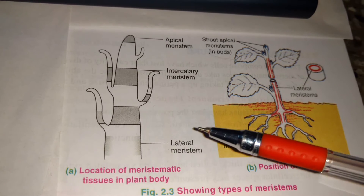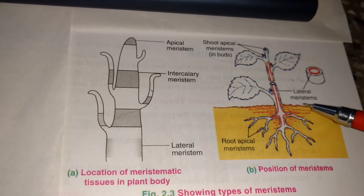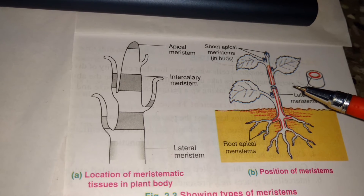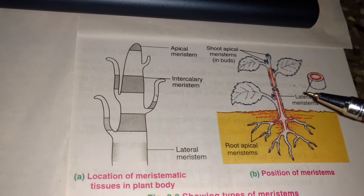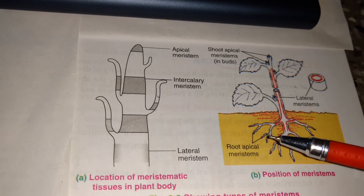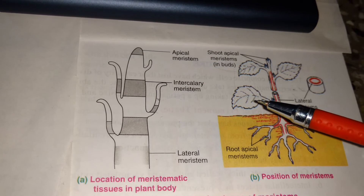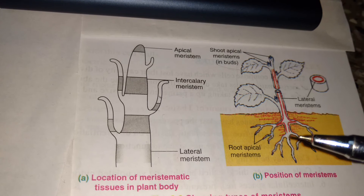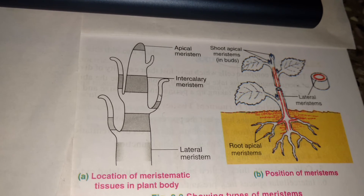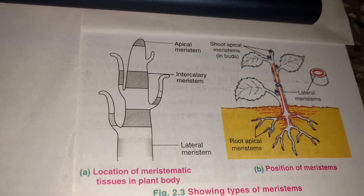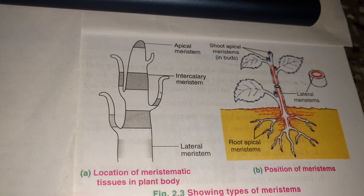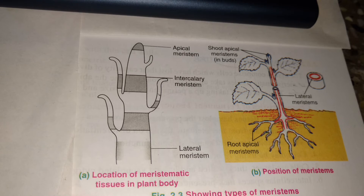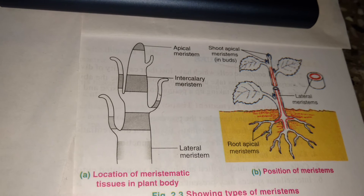Third is the lateral meristem. They are present at the lateral side of the root. Here you can see the lateral meristem, which is responsible for increasing the thickness, also known as girth, of the stem or root. They are present in the vascular cambium and cork cambium. Vascular cambium is present in the stems as well as roots, while cork cambium is in the tissues of the stem.